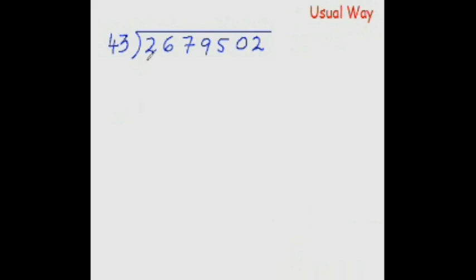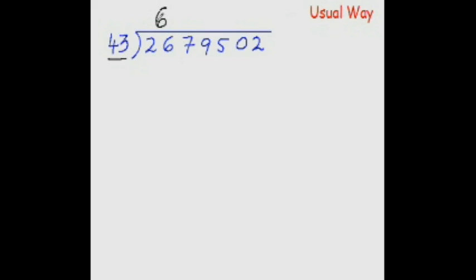Break the dividend into manageable parts. First we divide 267 by 43, but it's difficult to say right away how many times 43 goes into 267. So we make it more manageable: forget about the 3 and the 7, and ask how many times 4 goes into 26. 4 six times is 24, so write 6 as your quotient digit. Then multiply: 6 times 3 is 18, 6 times 4 is 24, and 24 plus 1 is 25. Subtract: 17 minus 8, borrowing 1, gives 9.